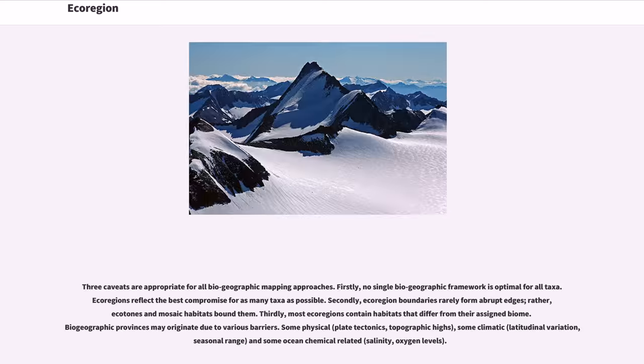Three caveats are appropriate for all biogeographic mapping approaches. Firstly, no single biogeographic framework is optimal for all taxa. Ecoregions reflect the best compromise for as many taxa as possible. Secondly, ecoregion boundaries rarely form abrupt edges; rather, ecotones and mosaic habitats bound them.